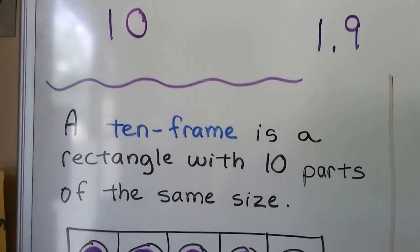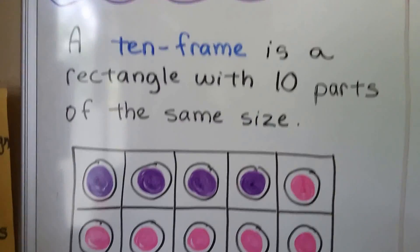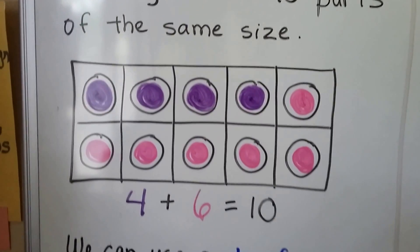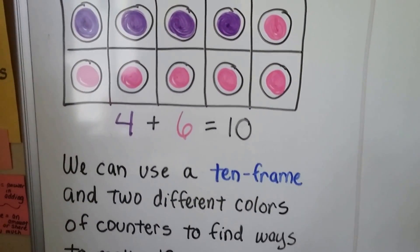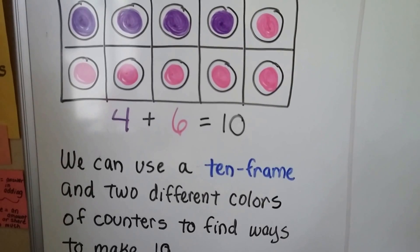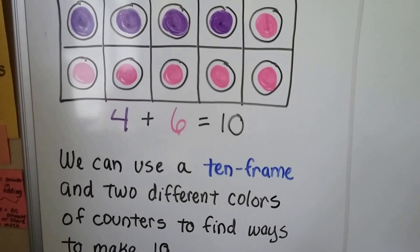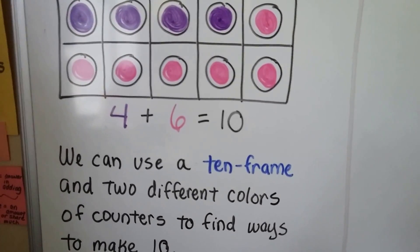A 10-frame is a rectangle with 10 parts of the same size. We can use a 10-frame and two different colors of counters to find ways to make 10. We have 4 purple and 6 pink. 4 plus 6 equals 10.